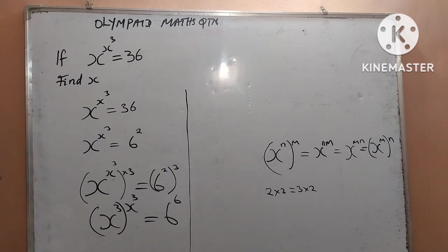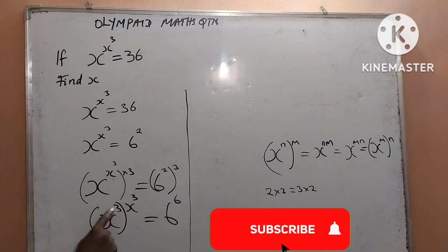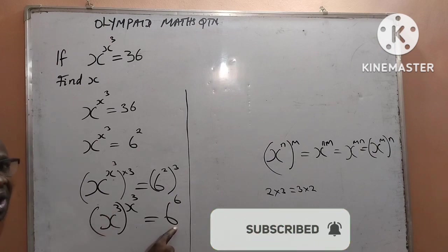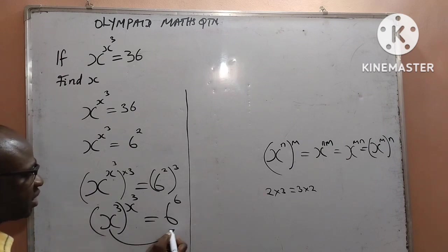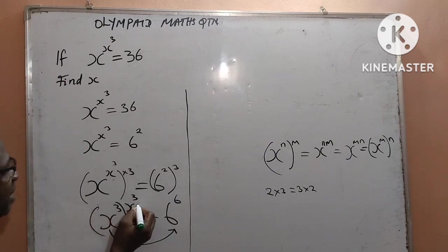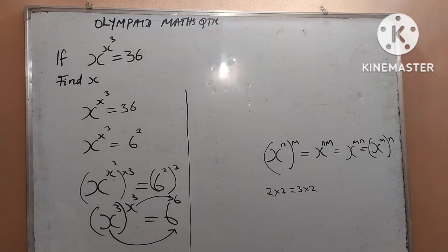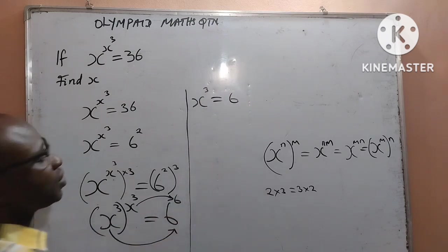If you look very well, you will agree with me that the base inside the bracket on the left is x to the power of 3, and it is also equal to the base on the right — which is also x to the power of 3. The power on the left is also equal to the power on the right. The base on the left equals the base on the right. This can now be written as: x to the power of 3 is equal to 6.